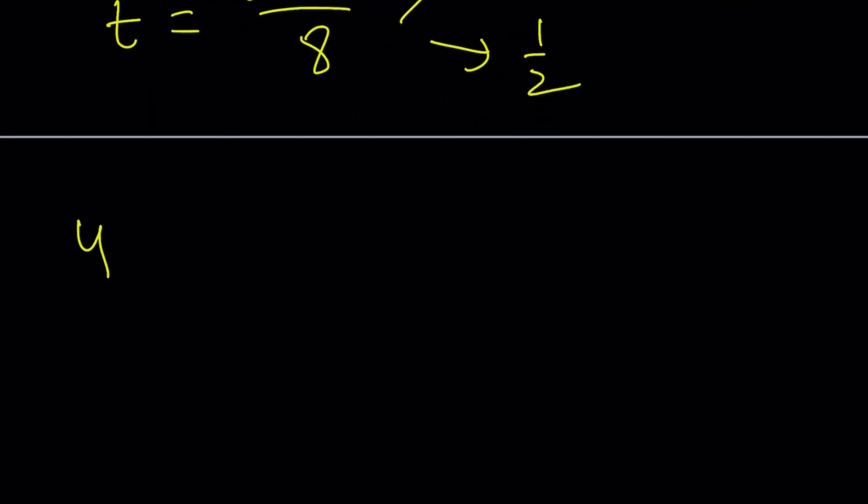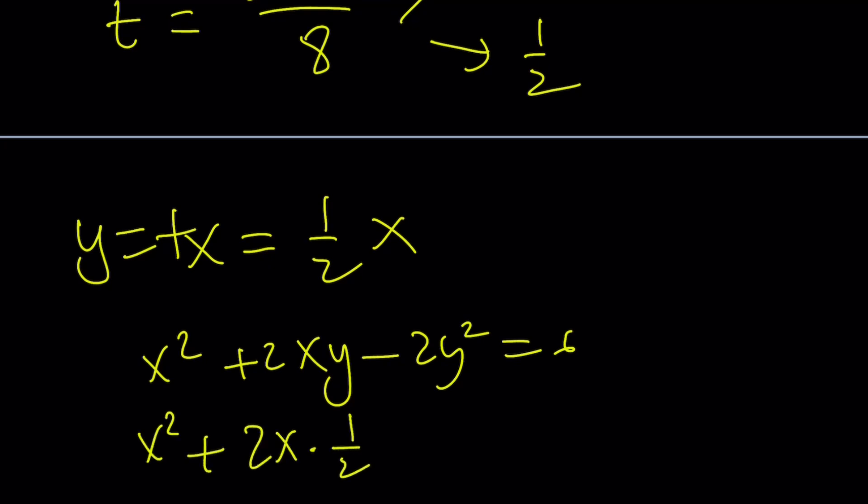y = tx so if you take go with 1/2 you're going to get this and plug it into one of the equations. I'll use the second one and the first one is very similar. If you plug in 1/2 of x for y then you're going to get 1/4 of x² the whole thing is equal to 6.